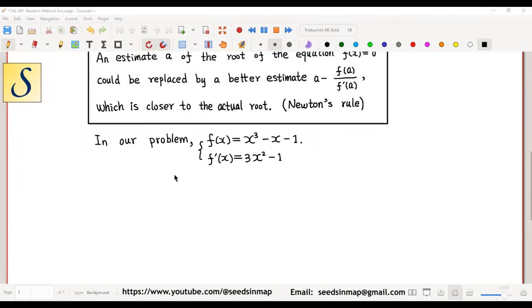In our problem, f(x) = x³ - x - 1 and f'(x) = 3x² - 1. Notice that f(1) is negative, f(2) is positive. So, there must be a root between 1 and 2. Thus, 1.5 is a reasonable estimate of the root of the equation f(x) = 0.